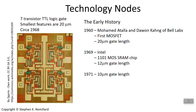The first MOSFET was invented in 1959 by Atala and Kong, and then they made one in 1960 at Bell Labs with a 20 micron gate length. By 1969, Intel was commercially producing the 1101 MOS SRAM chip, which had a 12 micron gate length. And by 1971, several players were making 10 micron gate length chips, including Intel's 4004 microprocessor.